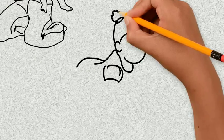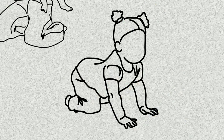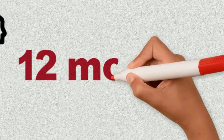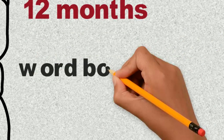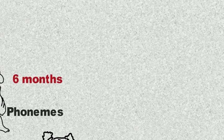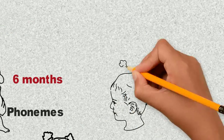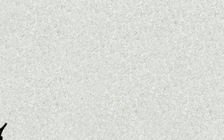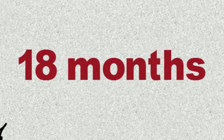At 12 months, we recognize word boundaries. At 18 months, we start attaching meaning to words.